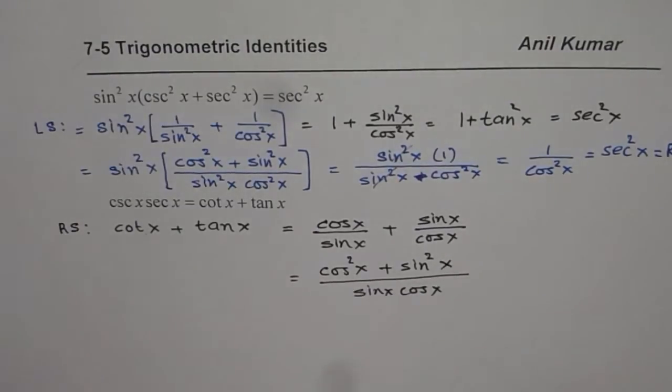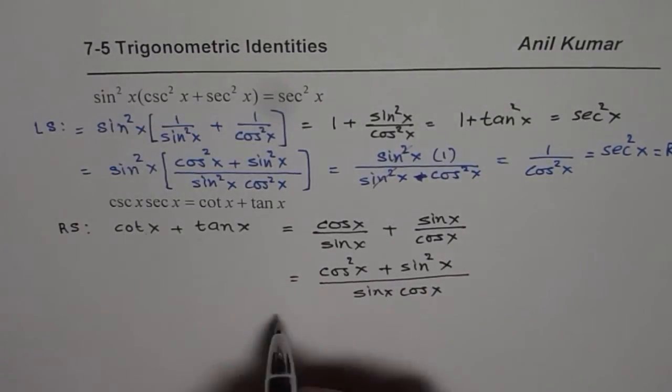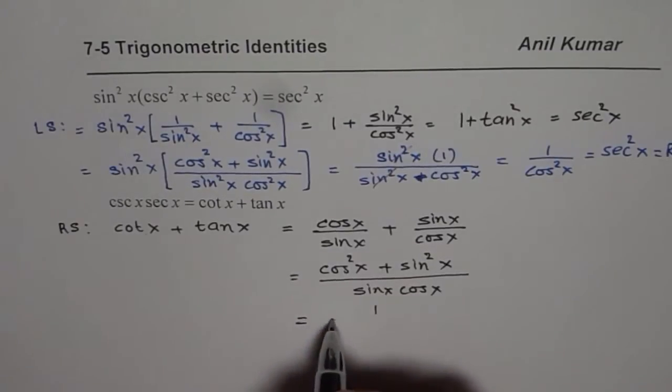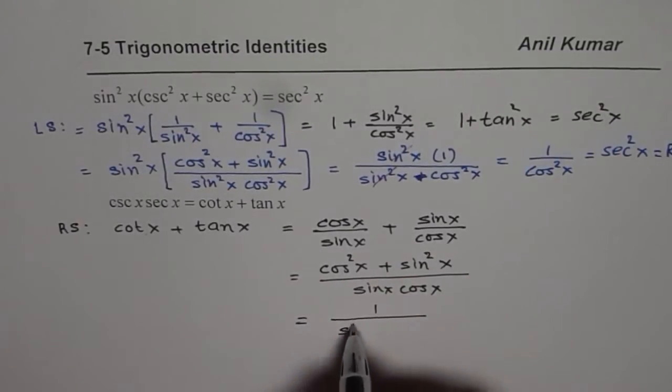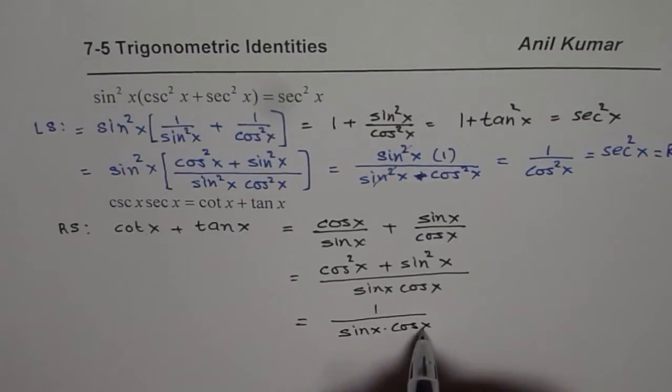Now as you know, cos²x + sin²x is 1. So we could write this as 1 over sin x times cos x.